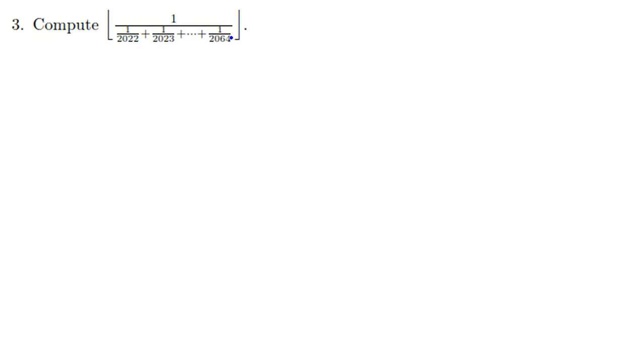Okay, so we want to solve this here. We say okay, it is A, this one. The denominator, suppose that the denominator is A. This part. So A is what? 1 over 2022 plus 1 over 2023 and plus 1 over 2064.